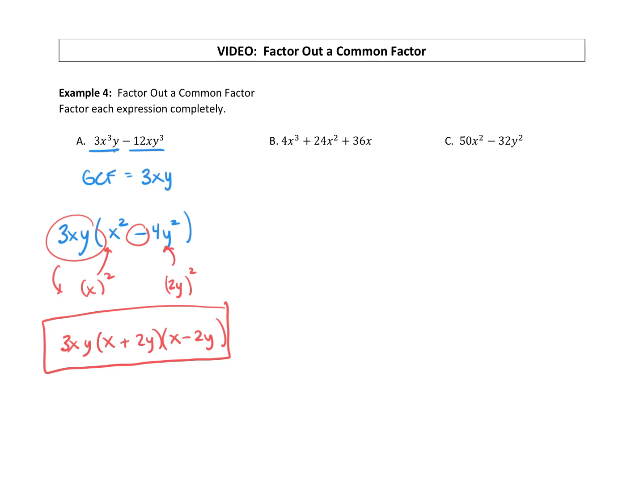All right, moving on to part B. 4x cubed plus 24x squared plus 36x. Do we have a GCF that we could factor out of all terms? Guess what? We do.